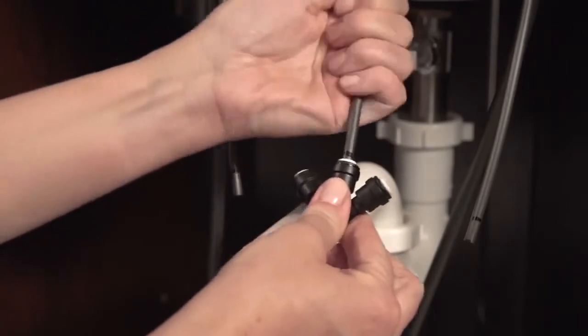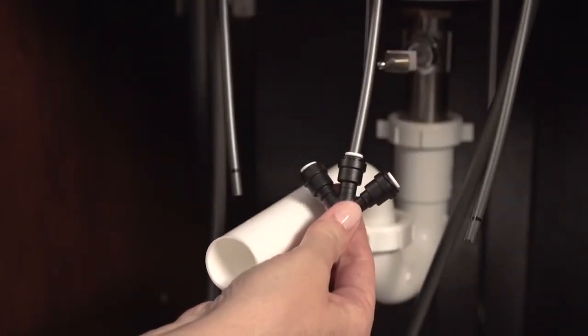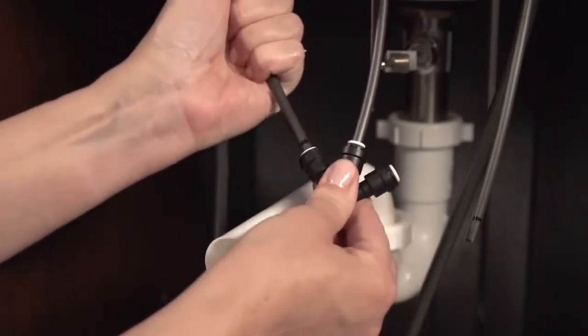When it's properly inserted, you should not be able to see the line marked on the tube. Now take your smaller tubes from under the hot and cold handle and insert in the same manner.